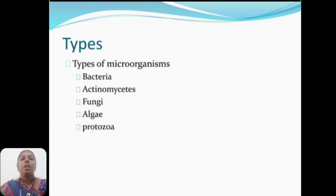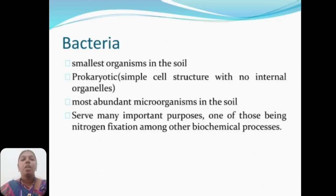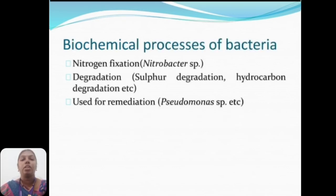Types of microorganisms: bacteria, actinomycetes, fungi, algae, and protozoa. Bacteria are the smallest organisms in the soil, are prokaryotes, and the most abundant microorganism in the soil. They serve many important purposes, one of those being nitrogen fixation among other biochemical processes.